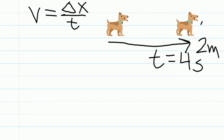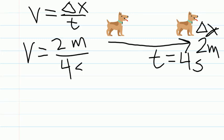Two meters is our displacement and our time is four seconds. To solve for the velocity, we take two meters over four seconds, and our velocity would be 0.5 meters per second.